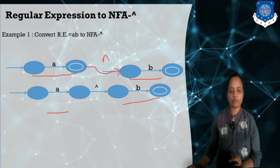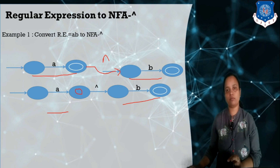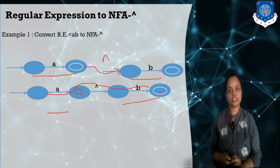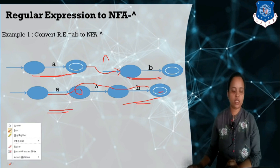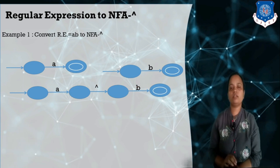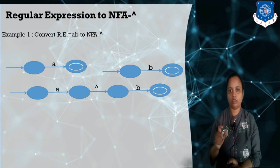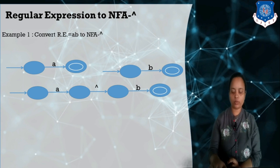Here you can see why I am not drawing the accepting state separately — because they said a dot b. If I follow this path: a, null, b, then I reach the accepting state. In this way, we can convert the given regular expression a dot b to an NFA-null. This is the basic structure of Thompson Construction Method — you have to remember this.